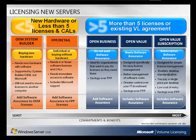FPP software is typically the most costly, but is good for low-volume licensing needs. What you do not get with OEM or FPP are the rights to re-image or downgrade, which can help deploy, manage, and cost-effectively support a consistent desktop experience. Volume licensing provides re-imaging and downgrade rights.